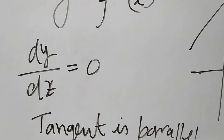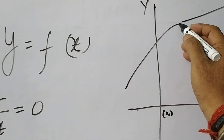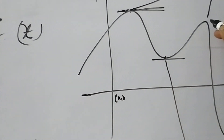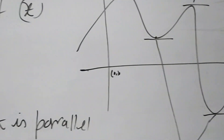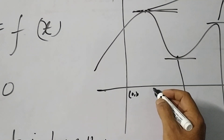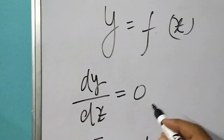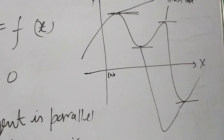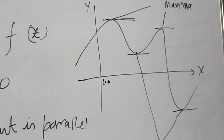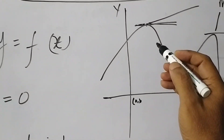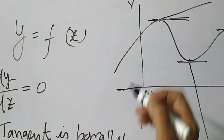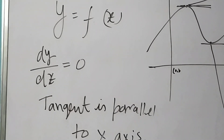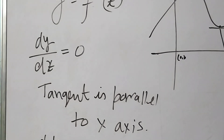One thing is clear: either at maxima or at minima, the tangent at these points will be parallel to the x-axis. So dy by dx will be zero at all these points, whether it is maxima or minima. But we have to clarify whether it is maxima or minima. Only dy by dx being zero cannot confirm that this point is maxima or minima.